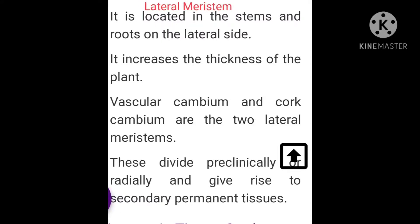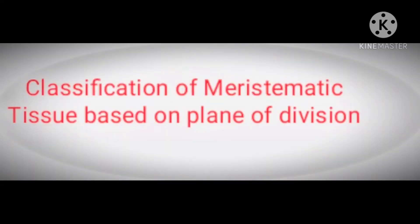Intercalary meristem ke baad aata hai Lateral Meristem. It is located in the stem and roots at the lateral side — cambium and cork cambium are the two lateral meristems. These divide periclinally and radially and give rise to secondary permanent tissues.